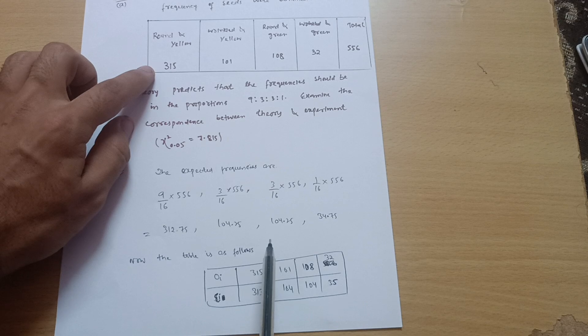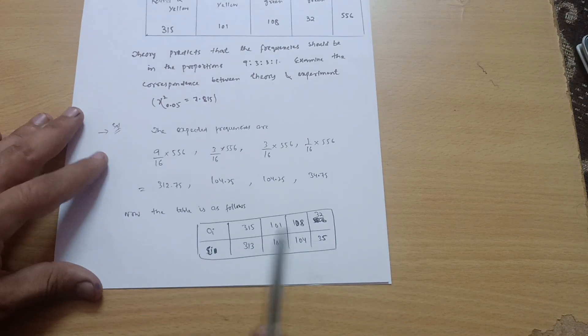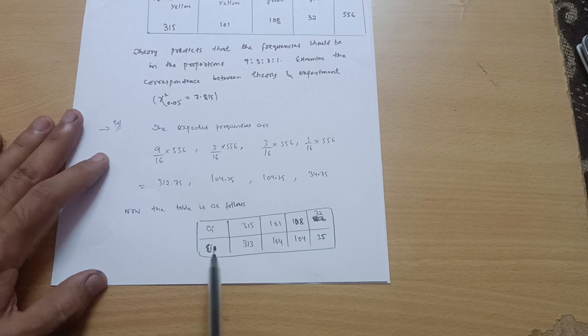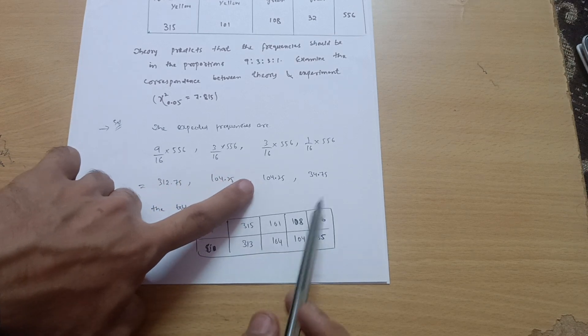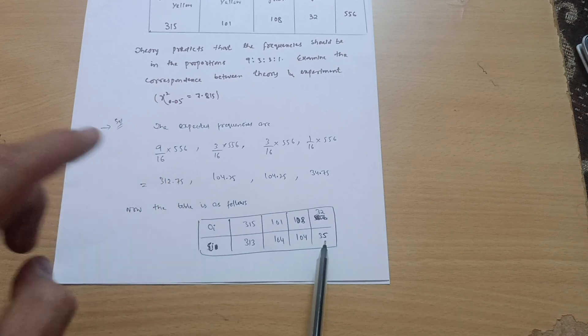Oi is equal to 315, these are the observed values in the question: 315, 101, 108, 32. And what are the expected values? 313, 104, 104, and 35.